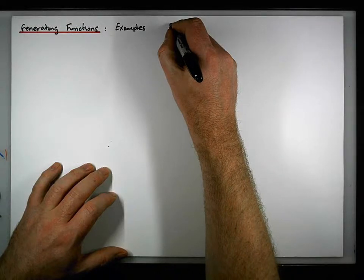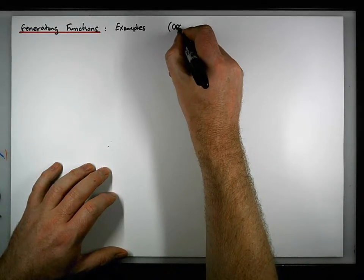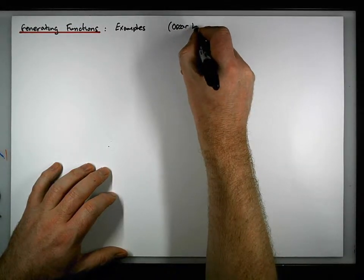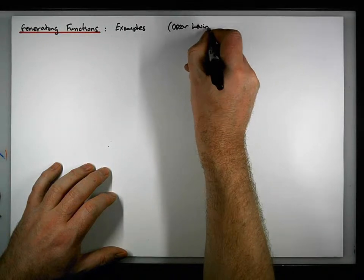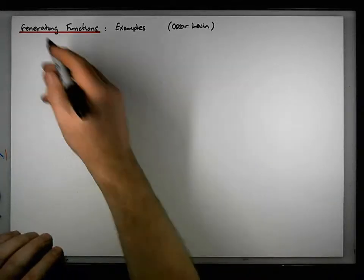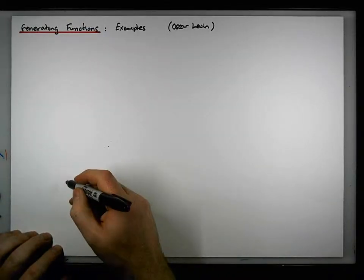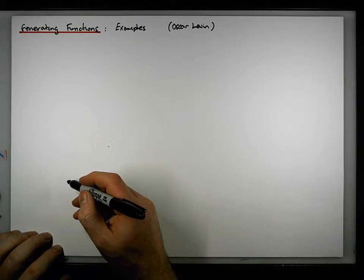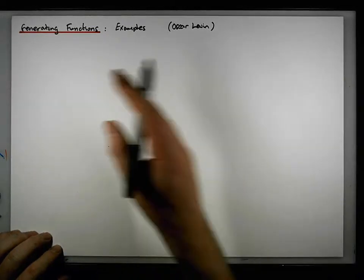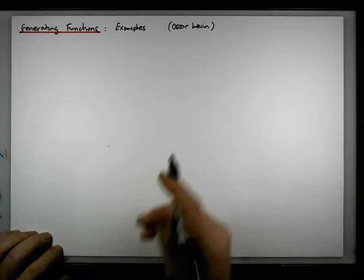Just to cite that particular site, it's by Oscar Levin. These are some nice examples for those to consider. So what I'm going to do is list down here some sequences that we want to construct the generating functions for.